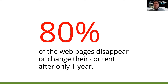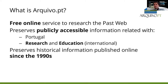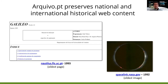The problem is that 80% of web pages disappear or change their content after one year. Archivo.pt is a free online service that anyone can use. It preserves publicly accessible information related to Portugal, but also for research and education in general. It preserves historical information published online since the 1990s — the oldest page we have is from 1993, and an image from 1992.